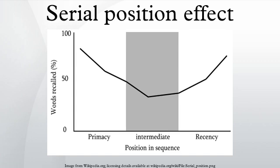The recency effect is reduced when an interfering task is given. Intervening tasks involve working memory; the distractor activity, if exceeding 15 to 30 seconds in duration, can cancel out the recency effect. Additionally, if recall comes immediately after test, the recency effect is consistent regardless of the length of the studied list or presentation rate.